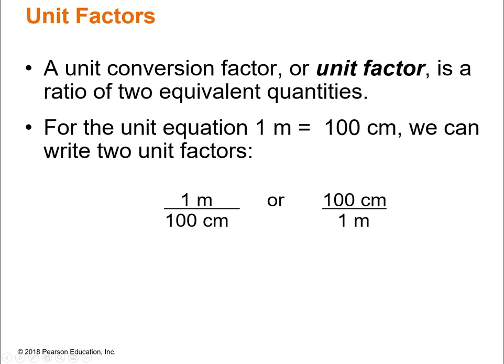We can take unit equations and write what's called a unit factor — it's just a ratio, a fraction. From the unit equation 'one meter equals 100 centimeters,' you can write two unit factors: one meter over 100 centimeters, or 100 centimeters over one meter. You're literally writing a fraction and then flipping it. Unit factors and fractions both start with F — that can help you remember.